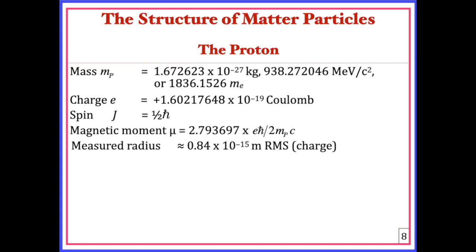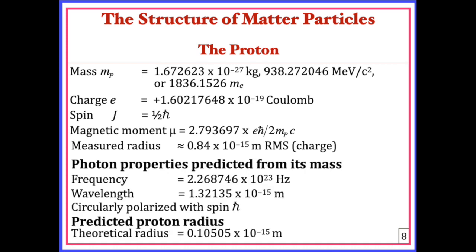The proton's magnetic moment is nearly three times what is predicted under this model. Here are some properties predicted by the rotating photon based upon the proton's measured mass — it includes a circularly polarized proton with a spin of h-bar, which would be the intrinsic spin. This model requires that a charged particle and a neutral particle must have an intrinsic spin difference of half h-bar. The discrepancies are that the measured root mean square charge radius is about eight times larger than the theoretically predicted value of 0.105 fm, and its measured magnetic moment is almost 2.8 times larger than predicted.